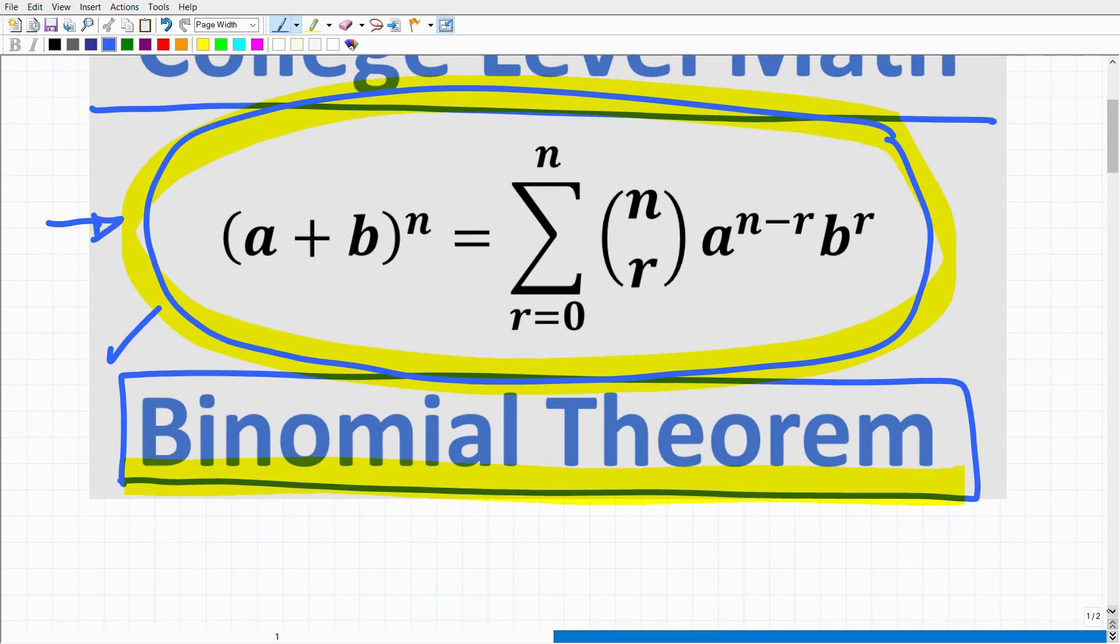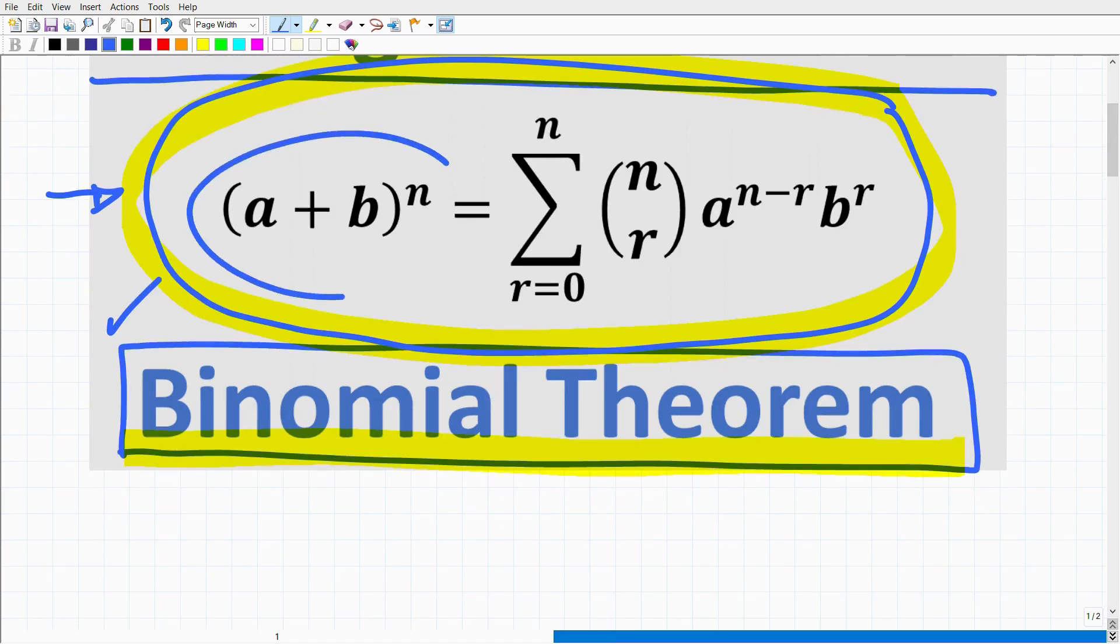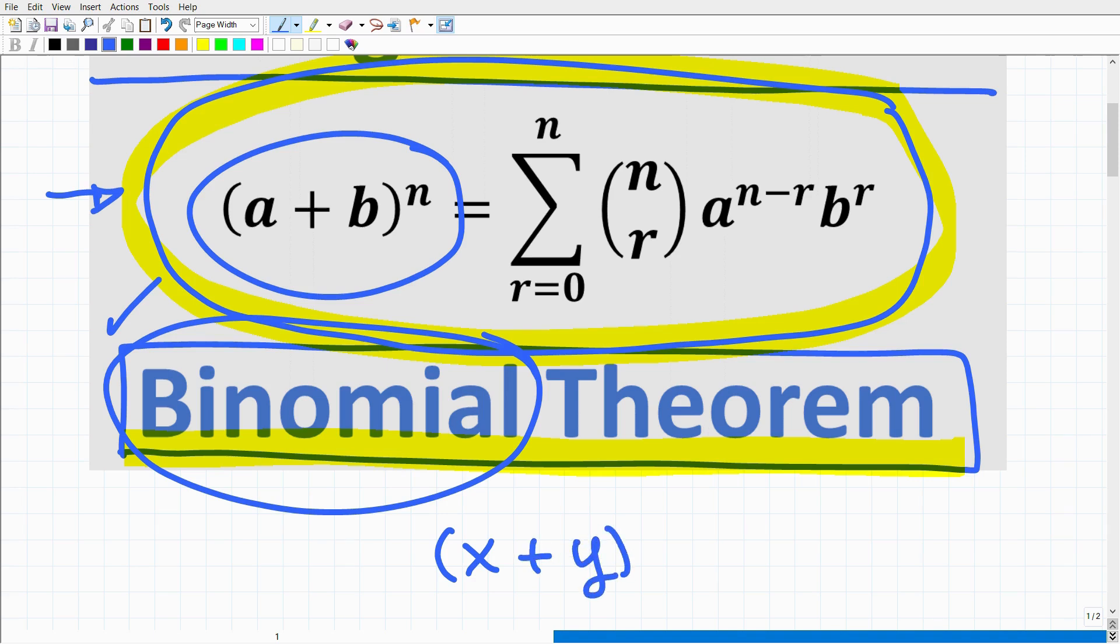So what is the binomial theorem? We're talking about a binomial in algebra. A simple example would be something like x plus y, right? So we have a polynomial with two terms. The binomial theorem is all about taking a binomial to a certain power. So let's say, for example, I have x plus y squared.